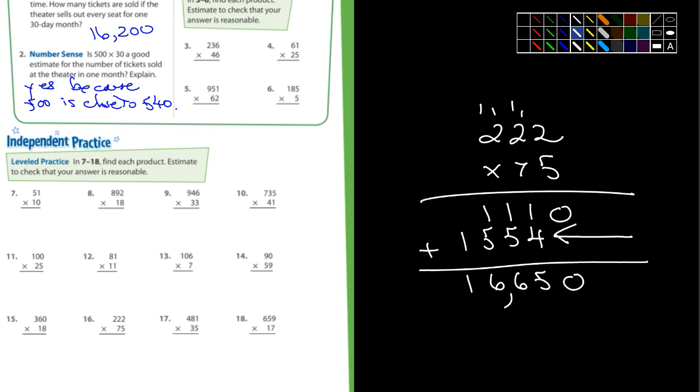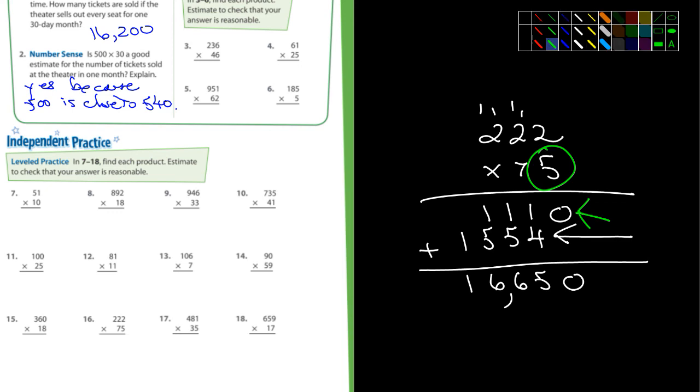Now, what I want to point out to you guys is that when I multiplied by 5, and I started right here, I started in the 1s place. But when I multiplied by 7, that's the 10s place. So that's why I moved in one. So I start with the 10s place. And then if I had multiplied by 3 digits, then I would have moved in another one. And I would have made sure everything stayed lined up. And then you just add them together.